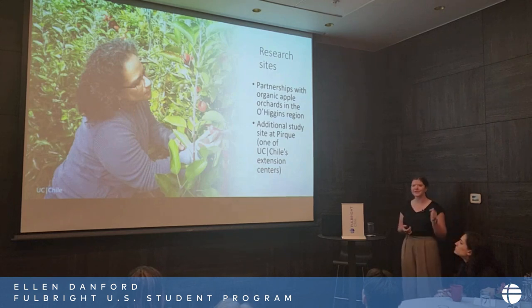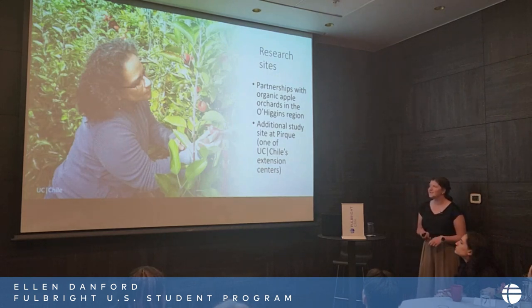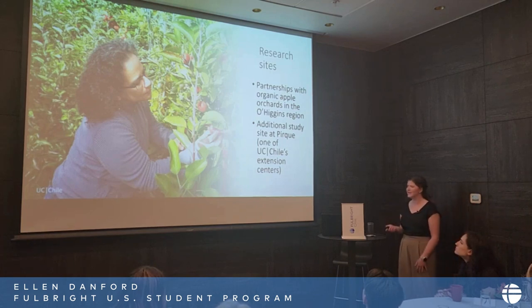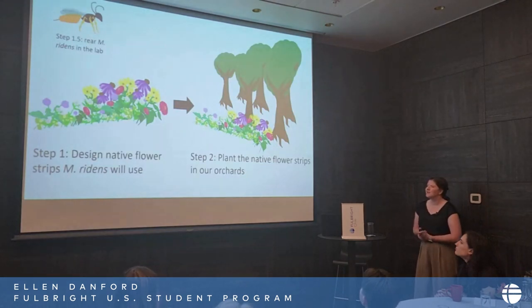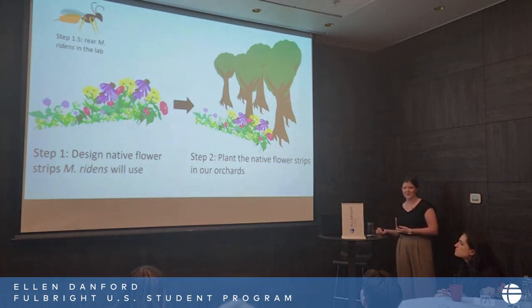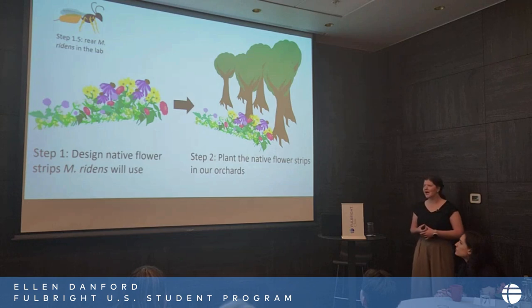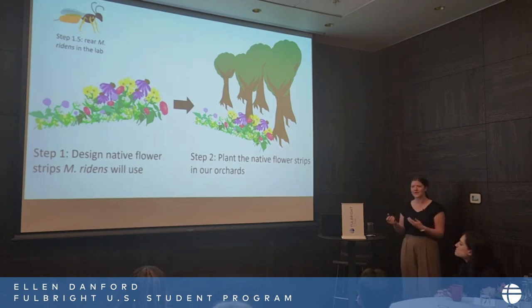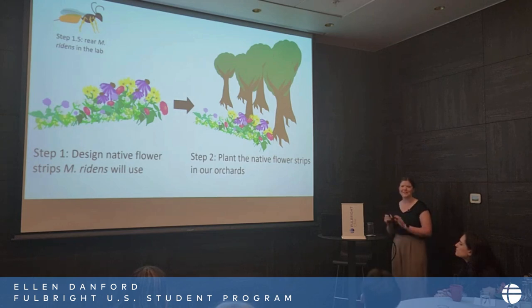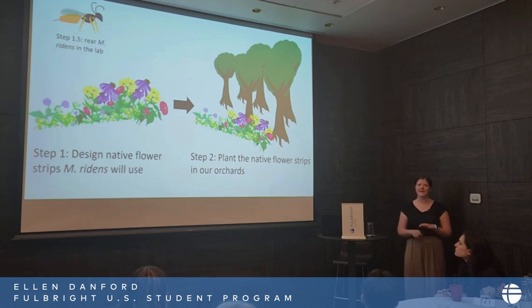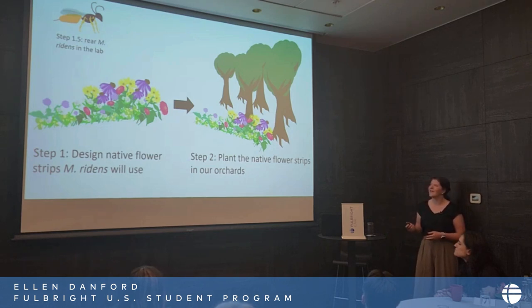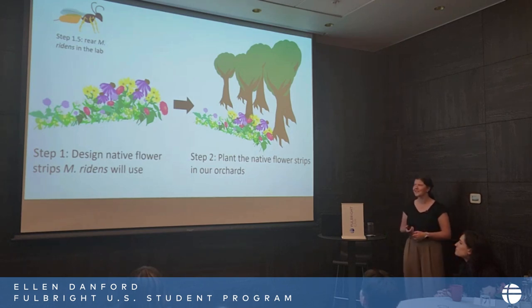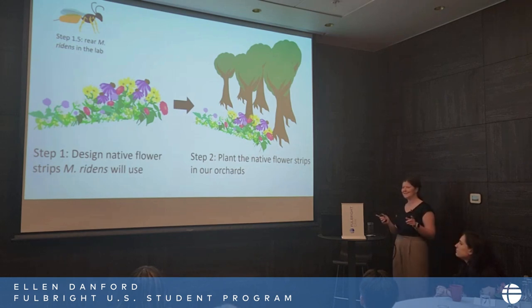Our goal is to support Mastrus ridensis in apple orchards using native Chilean flower strips to give them nectar resources. We have a couple research sites in the O'Higgins region, south of here, and we're also doing a study site at Pirque, which is one of La Católica's extension centers. The first step is to design native flower strips that Mastrus ridensis will use. As it turns out, they have a very large head, so flowers with tiny stems won't work because they can't actually reach the nectar sac. We're finding really large open flowers where they can access the nectar. We're also trying to use flowers that are not attractive to the codling moth. Step one and a half — happening throughout everything — is rearing Mastrus ridensis in the lab; we already have an established colony and are continuing to rear more wasps.